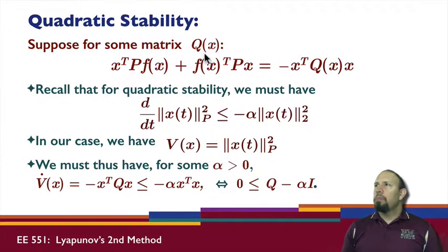So now suppose we have some function Q of x. And suppose now our derivative along the system trajectory can be factored into a quadratic form in x. Notice here, Q may be a function of x, and I also have an x transpose on the left, x on the right. So recall that for quadratic stability, we need this quantity. The derivative of x of t p norm squared, this is actually V of x.